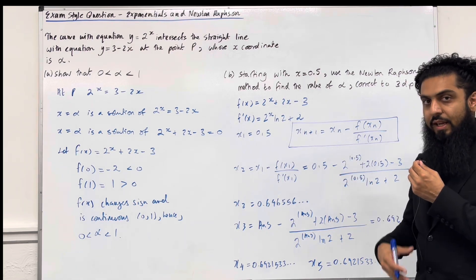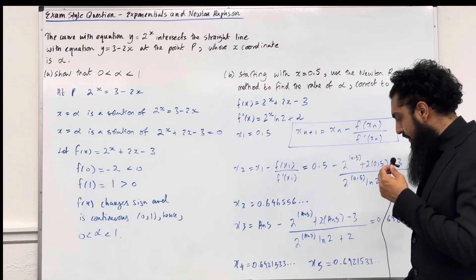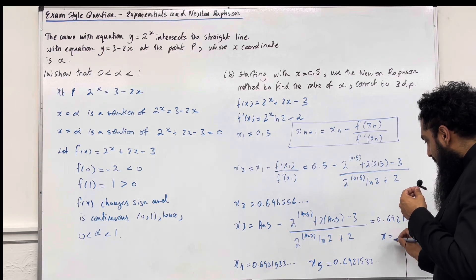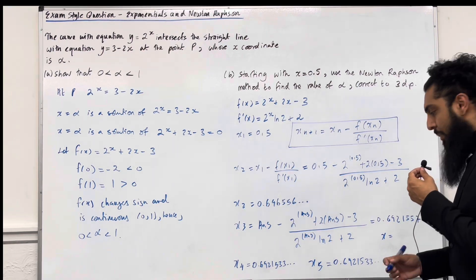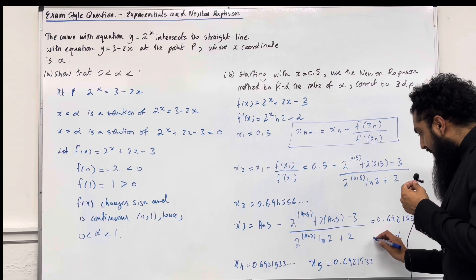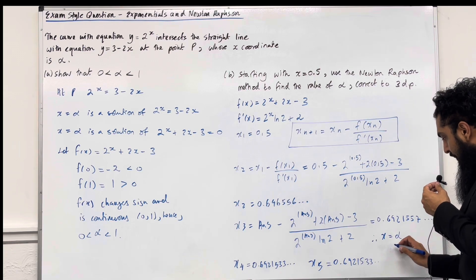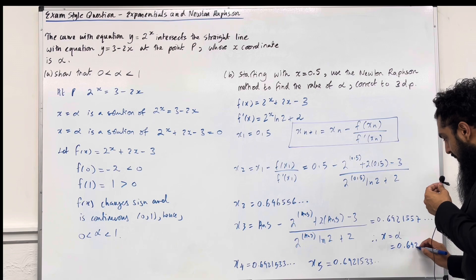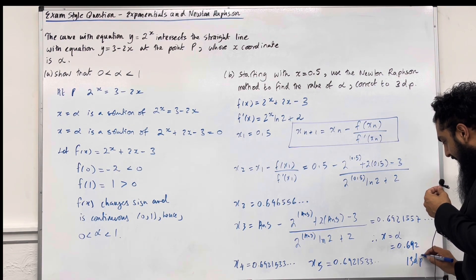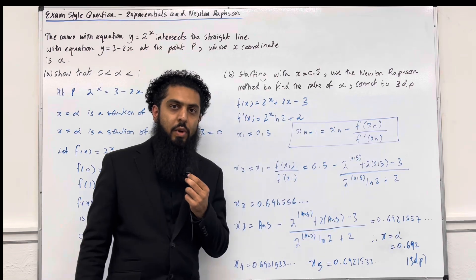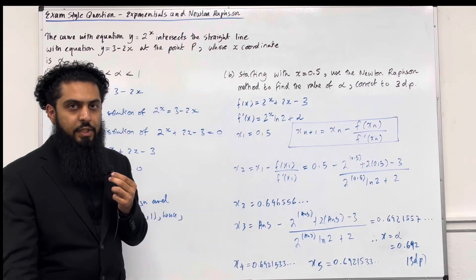I can stop there and conclude that x equal alpha is equal to 0.692 to three decimal places. This completes part B of the exam-style question and this teaching video.